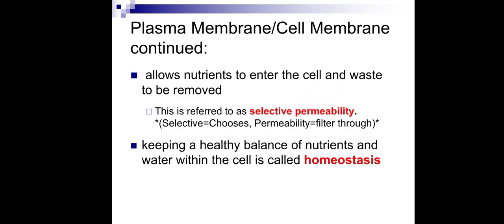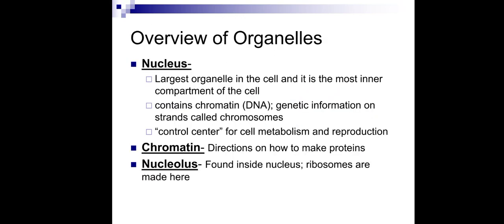This balance is known as homeostasis. A eukaryotic cell has a nucleus — it is the largest organelle of the cell, and also the most inner compartment. So the largest organelle of a cell is the nucleus, not mitochondria. The nucleus contains chromatin or DNA. The genetic information on the strands are known as chromosomes. The nucleus is the control center for all cellular functions like metabolism and reproduction — it controls everything a cell performs.